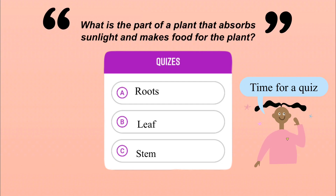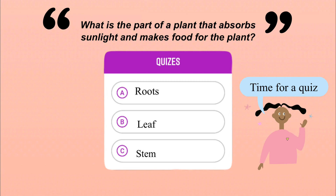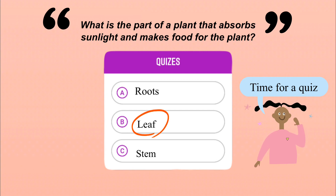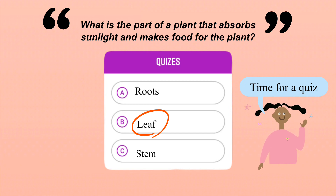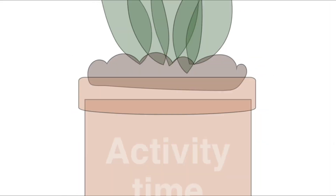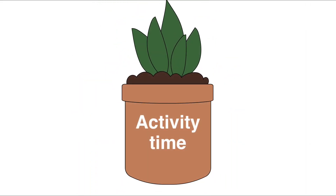Okay children, we have learned the parts of a plant. Why don't you try this quiz? The question is: what is the part of a plant that absorbs sunlight and makes food for the plant? Yes, that's right — it is the leaf, which makes food for the plant by absorbing sunlight.